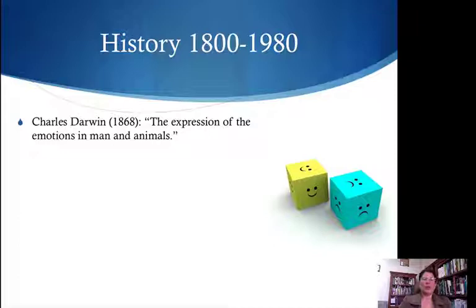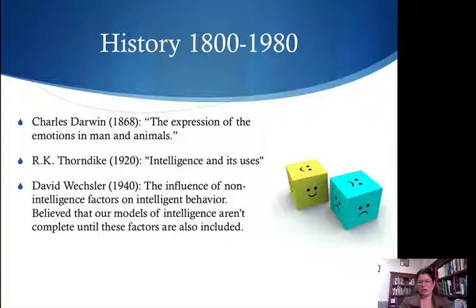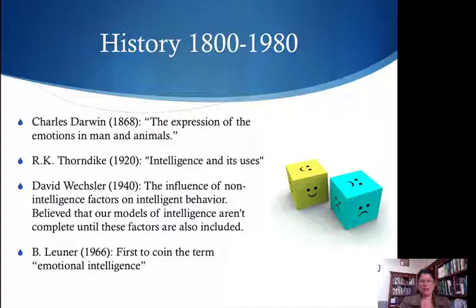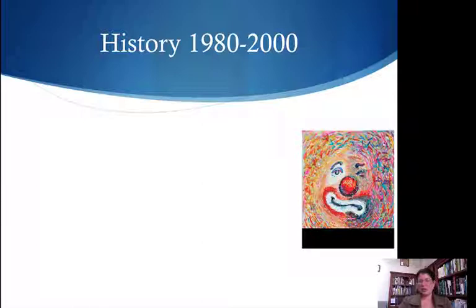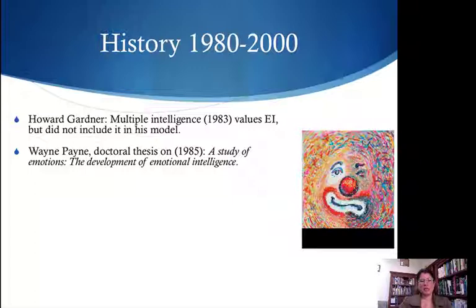To put this in a general context: Darwin looked at whether there were distinct emotions between animals and humans. Thorndike examined parameters to determine intelligence, and we included emotions there. In the Wechsler test, there are non-intelligence factors including emotional stability. Lerner actually coined the term 'emotional intelligence.' Gardner never included emotional intelligence in his list, though he respects they exist. In 1985, there was a first doctoral thesis on emotional intelligence.